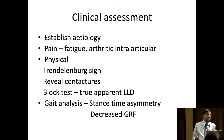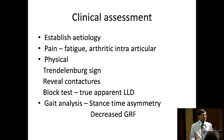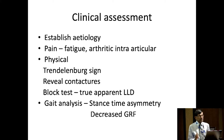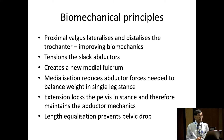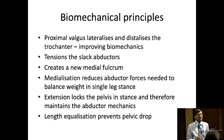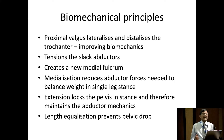Like everything else in orthopedics, you have to establish the cause and establish where the pain comes from — whether it's fatigue from the biomechanical point of view or arthritic and intra-articular. We have done a few gait analyses; it does reduce stance time asymmetry and decrease GRF. The biomechanical principle is to produce proximal valgus which lateralizes and distalizes the trochanter, thereby improving the lever arm and biomechanics. It tensions the slack abductors, creates a new medial fulcrum, and medialization reduces the abductor forces needed to balance weight in single leg stance. Extension locks the pelvis in stance and maintains abductor mechanics. Length equalization prevents further pelvic drop, as many patients with LLD have a combination of Trendelenburg and short limb gait.